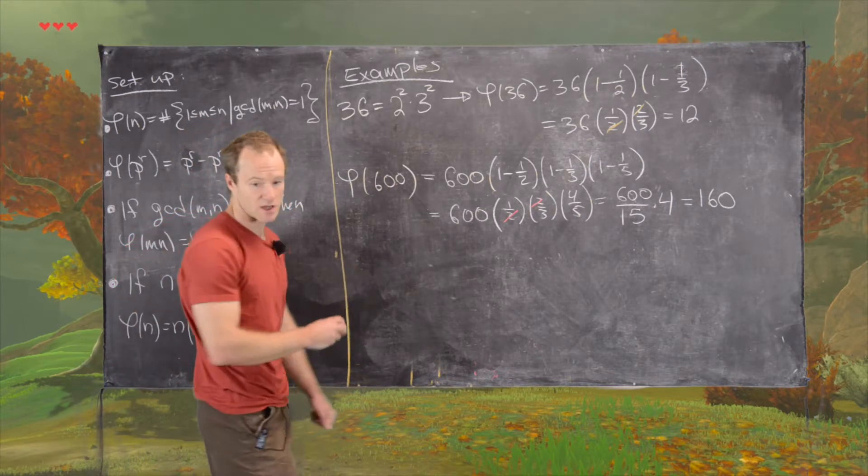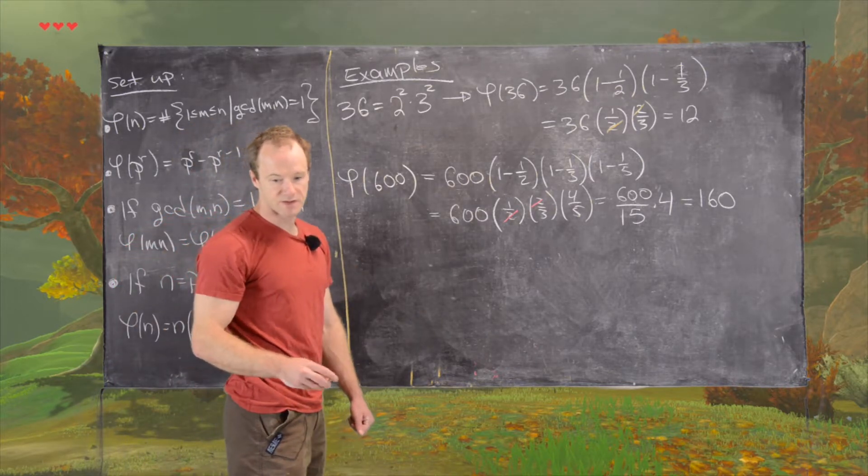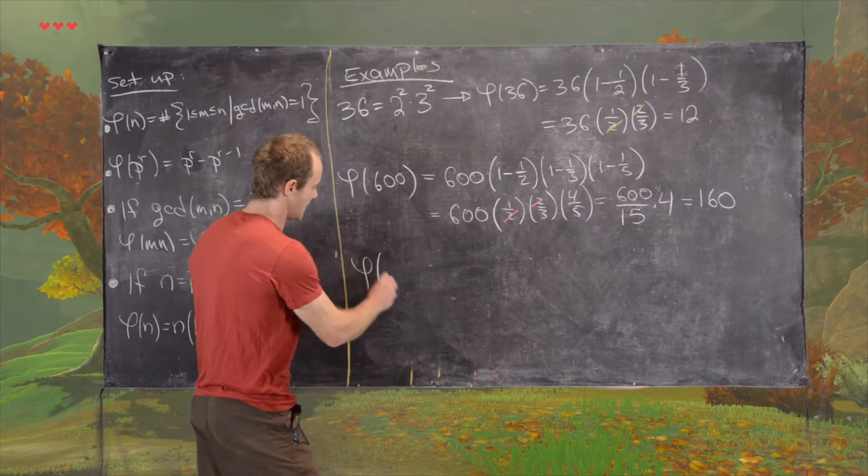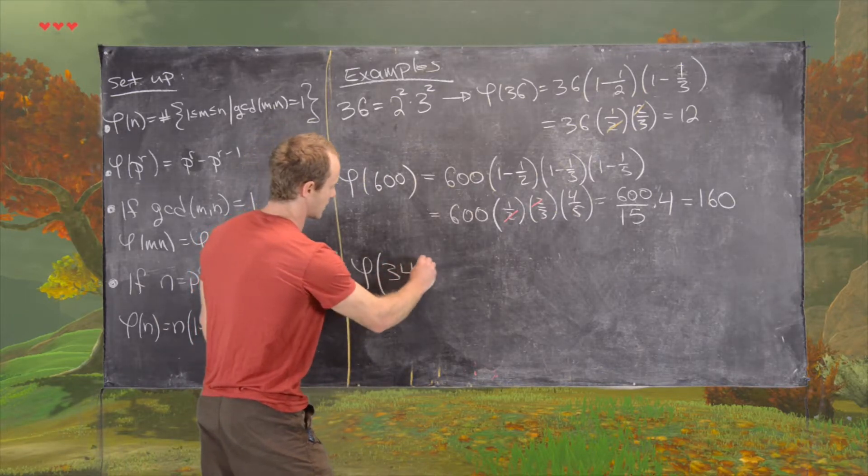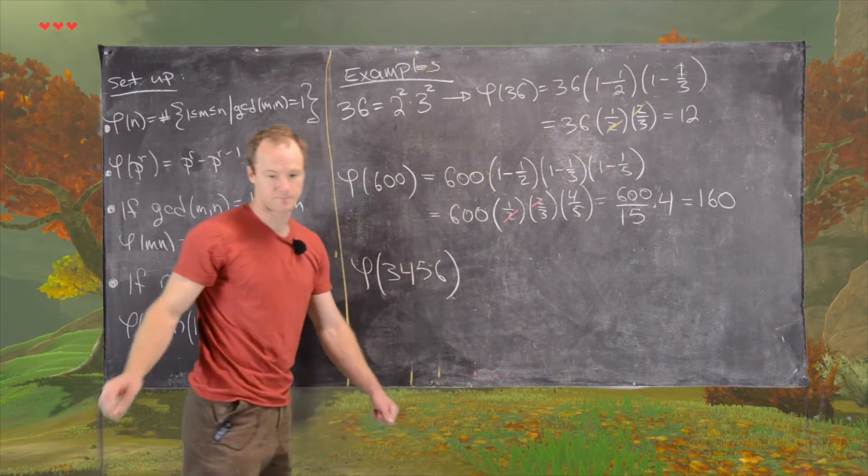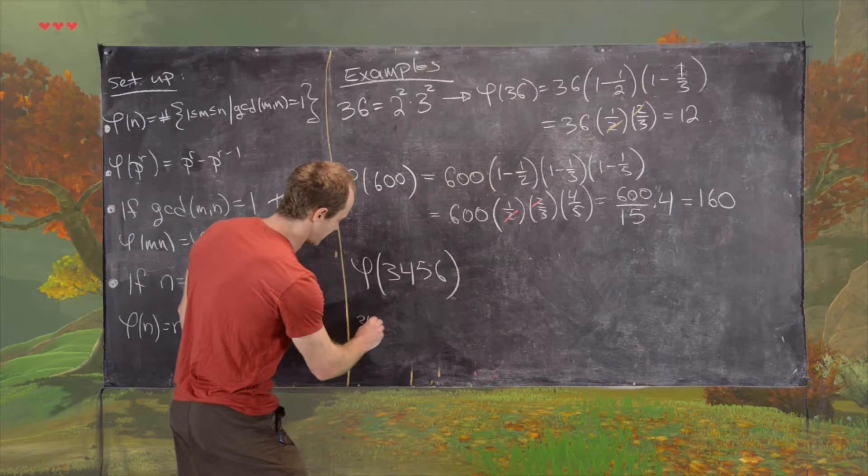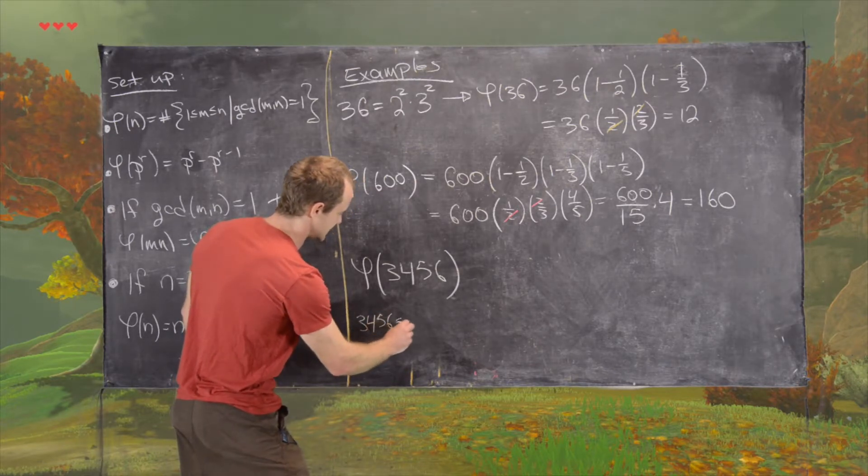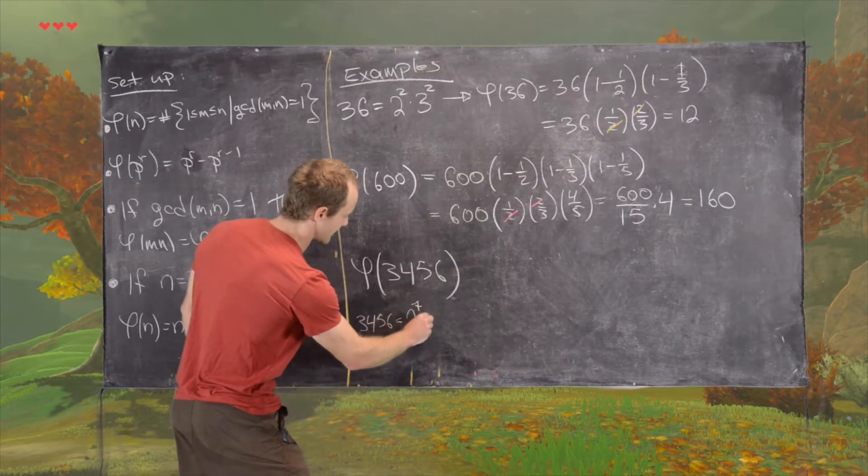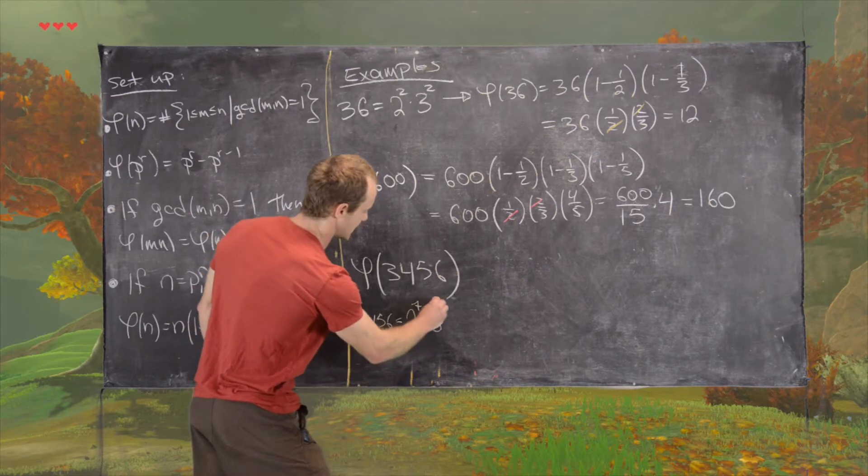So let's do maybe one more example. So let's maybe do phi of 3456. And so in this case we'll use the fact that 3456 is equal to 2 to the 7 times 3 squared.